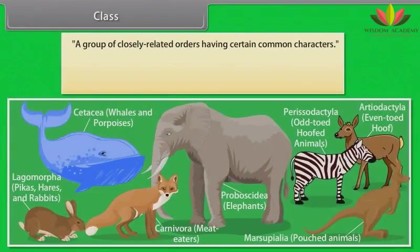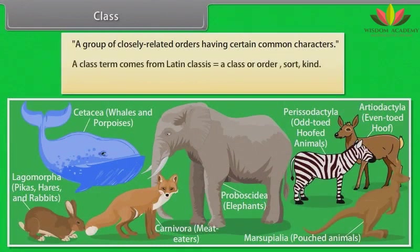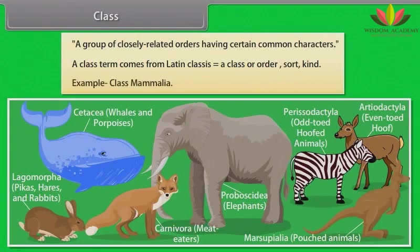Class: A group of closely related orders having certain common characters. The term class comes from Latin classes, meaning a class, order, or kind. Example: Class Mammalia.